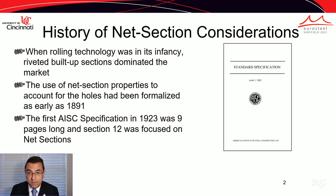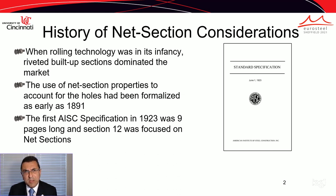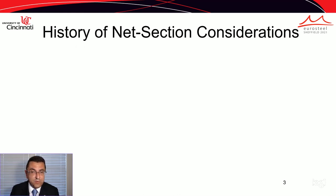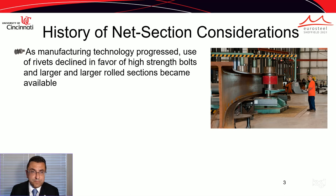Even the AISC specification in its first edition in 1923 — which was nine pages long as opposed to current size specifications — had Section 12 focused on the calculation of net section properties for design purposes.